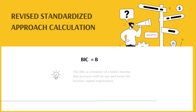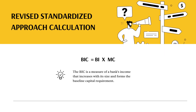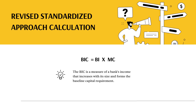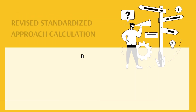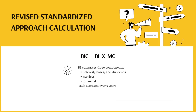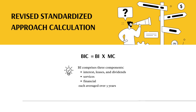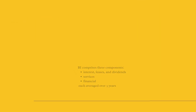The BIC is a measure of a bank's income that increases with its size and forms the baseline capital requirement. It is calculated by multiplying the business indicator, BI, by marginal coefficients, which are predetermined constants based on the bank's size. Under Basel IV, BI comprises three components — interest, leases, and dividends; services; and financial — each averaged over three years.